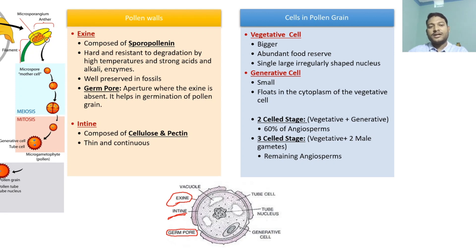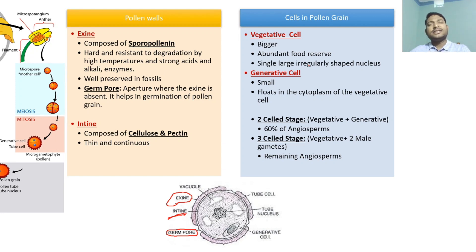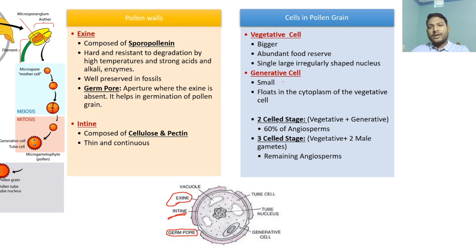The intine, on the other hand, consists of cellulose and pectin, and is typically thin and continuous. Regarding the two cells: the vegetative cell is typically bigger, abundant in food reserves, and has a single large irregularly shaped nucleus. The generative cell is typically small and floats in the cytoplasm of the vegetative cell. One of these cells gives rise to the two male gametes, whereas the other cell helps in formation of the pollen tube — we will talk about that during the pollination part.